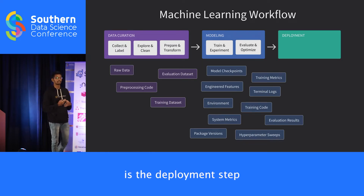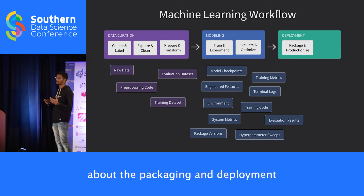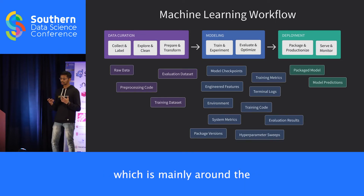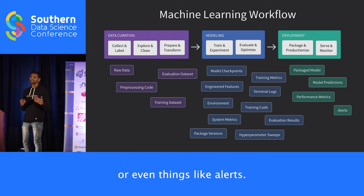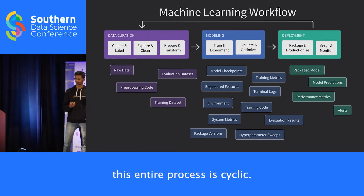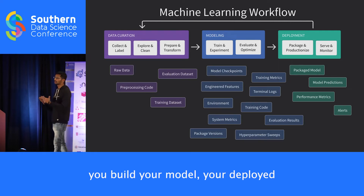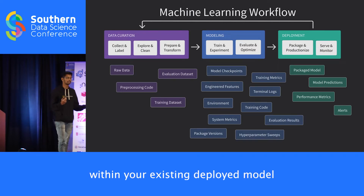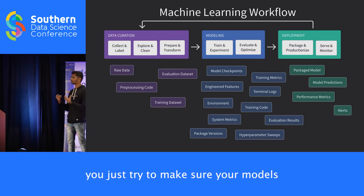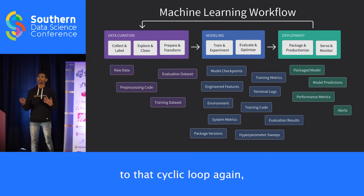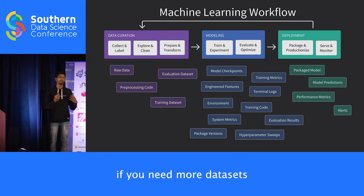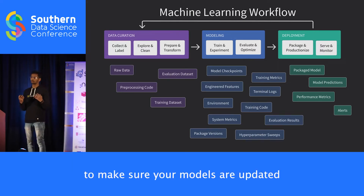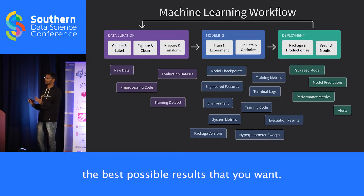The last step is the deployment step, covering packaging, deployment, serving, and monitoring. This stage has its own artifacts, mainly around model predictions and alerts. The entire process is cyclic: you start from development, build your model, deploy it, then check for regressions or errors in your deployed model and ensure models are updated over time. That takes you back to the cyclic loop — thinking about whether you need more datasets or a better model architecture to make sure your models give you the best possible results.